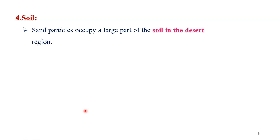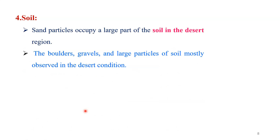If you are talking about the soil of the desert region, the sand particles occupy a large part of the soil. This soil is not too fertile — it is very less fertile, with an absence of organic matter. Even where organic matter can be seen, the proportion is very less. Therefore, these desert soils are not too fertile and have poor nutrient content.